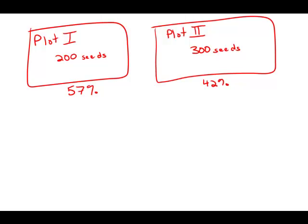In a horticultural experiment, 200 seeds were planted in plot 1 and 300 were planted in plot 2. If 57% of the seeds in plot 1 germinated and 42% of the seeds in plot 2 germinated, what percent of the total number of planted seeds germinated?